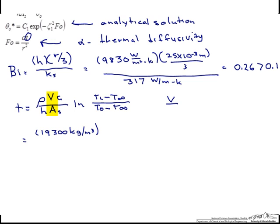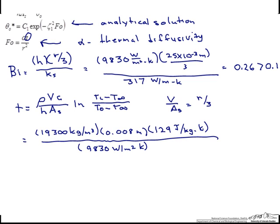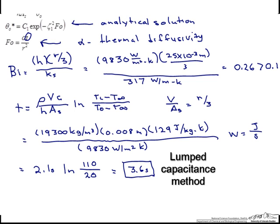For a sphere, the volume divided by the surface area is just r over 3. And when we calculate this out, we find that this is 2.1 seconds times the natural log of t i minus t infinity, which is 110, divided by t sub 0 minus t infinity, which is 20. And this ends up being 3.6 seconds. So that would be the time we would get if we use the lumped capacitance method.